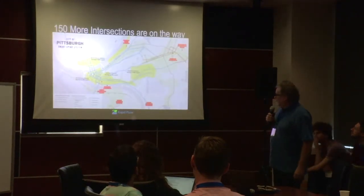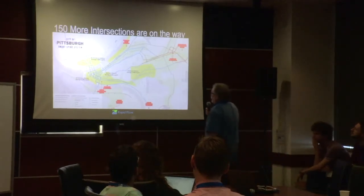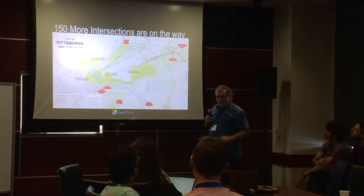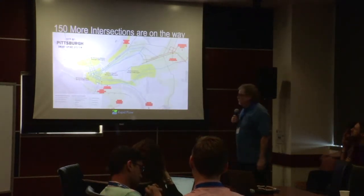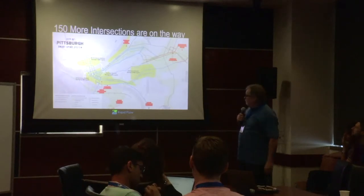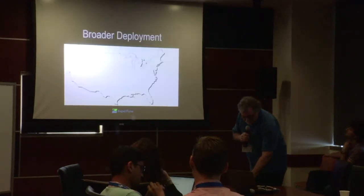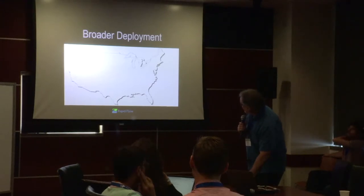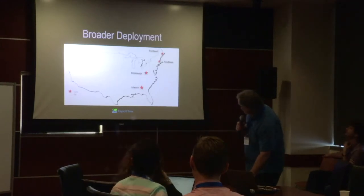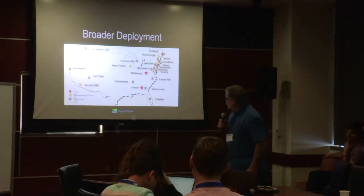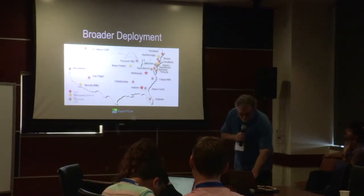We've now expanded several more times and are currently running a network of 50 intersections on the east end of Pittsburgh. The city has funding to add 150 more intersections over the next couple of years, which would be about a third of signals in the city. We formed a company, Rapid Flow Technologies, in 2015, and are currently deployed in five cities with six more lined up for this year.